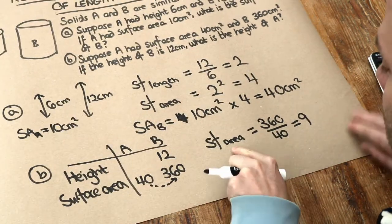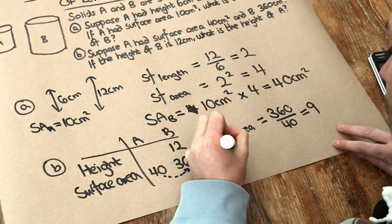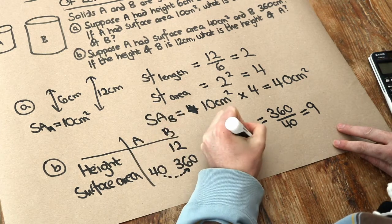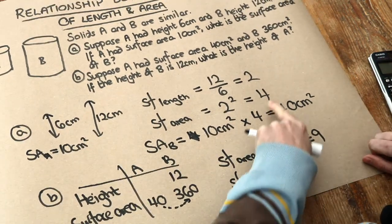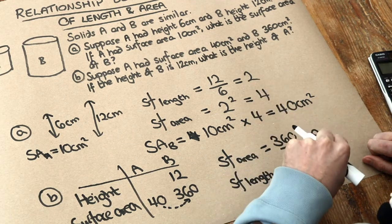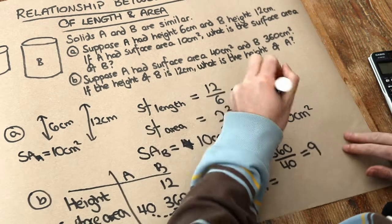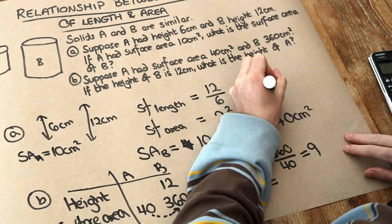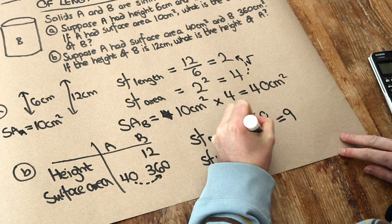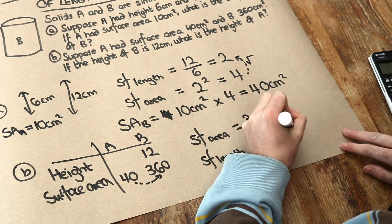Now if we know the scale factor of surface area we can find the scale factor of length — for example for height. Remember, the scale factor of area is the scale factor of length squared. Conversely, if we know the scale factor of area we can square root it to get the scale factor of length. So we just need to square root that 9 to work out the scale factor of length, and that is 3.